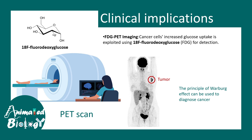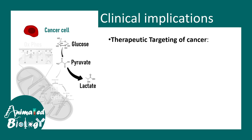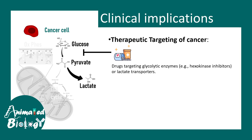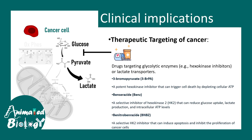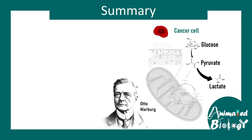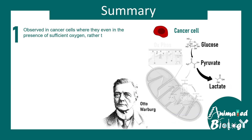The key principle behind this imaging is basically the Warburg effect, and it has several clinical implications. Given that cancer cells prefer glycolysis, several specific inhibitors that block glycolytic enzymes — such as hexokinase inhibitors — could be good cancer therapeutics.